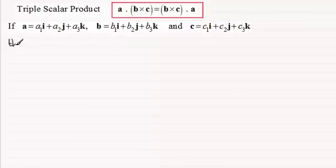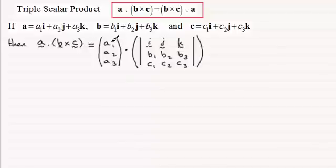Then when it comes to working out A dotted with B crossed with C, then what are we going to get? Well, it's going to equal A1, A2, A3 dotted with B crossed with C. And I've written this in determinant form. You should be familiar with this if you've watched the previous video tutorials on the vector cross product. So working this out further, you're going to have the dot product between the vector A with components A1, A2, and A3.